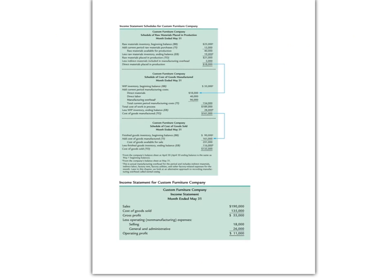There is a lot of information on this slide. I wanted to show you the big picture first before we zoom in and take a look at each of the individual schedules. What we have here is an example for a company called Custom Furniture Company — this is the example from my book. At the very top is the schedule of raw materials placed in production, below that the schedule of cost of goods manufactured, and then the schedule of cost of goods sold, which gives us the cost of goods sold number for the income statement.